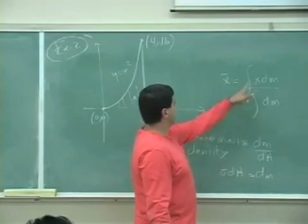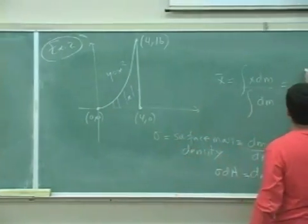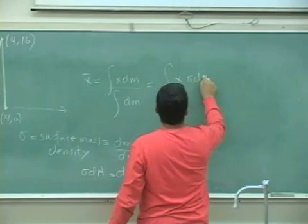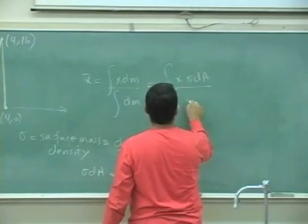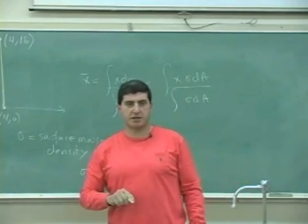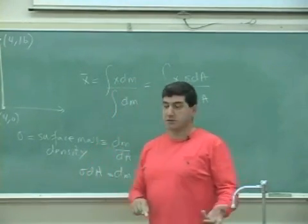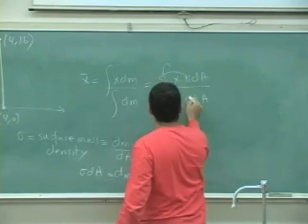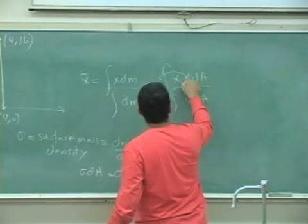So then I put that in here: integral x sigma dA over integral sigma dA. Sigma cancels. If it's uniform, it comes out and cancels.